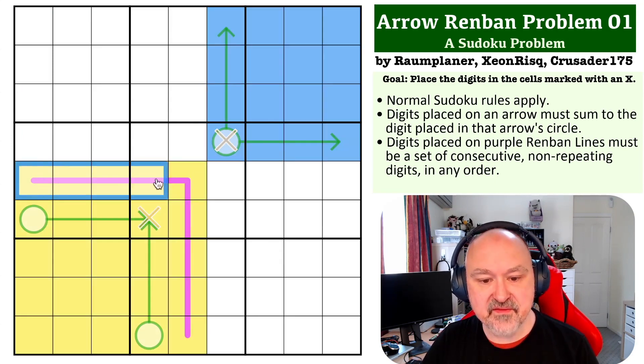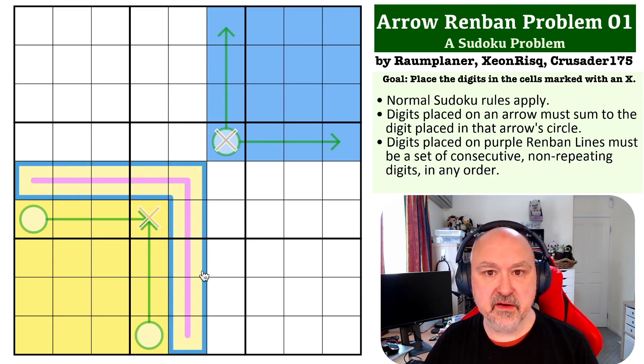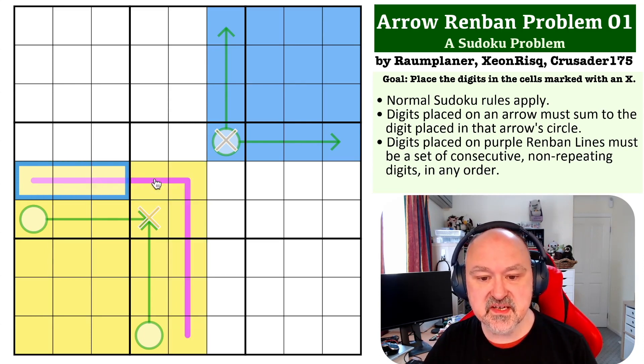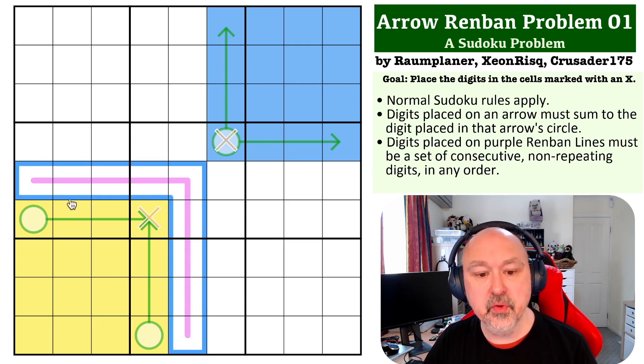Now, what we have is this Renban line. A Renban line contains a set of non-repeating digits in any order, but this is a nine-cell long Renban line, so this must contain a set of the digits from one to nine. So, if we just drop that out of yellow, then what we know is yellow had an extra set of the digits one to nine on top of blue, and now we've canceled that out. So, blue and yellow are now exactly equivalent.